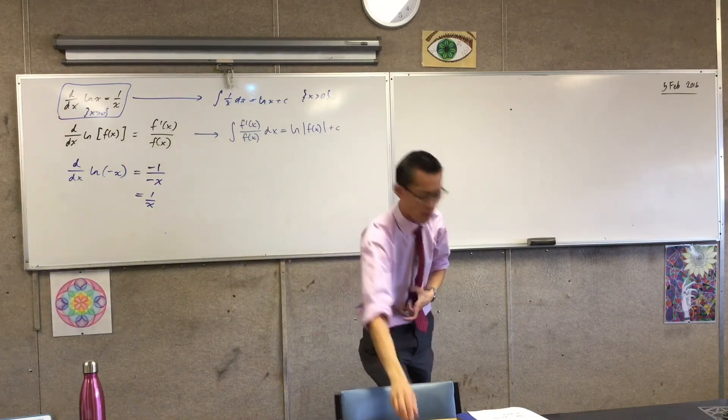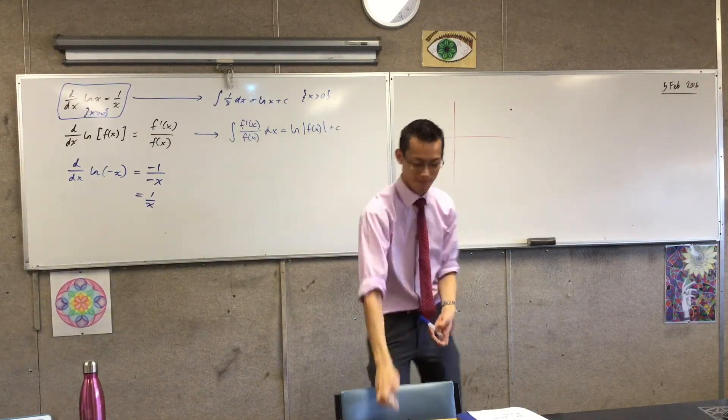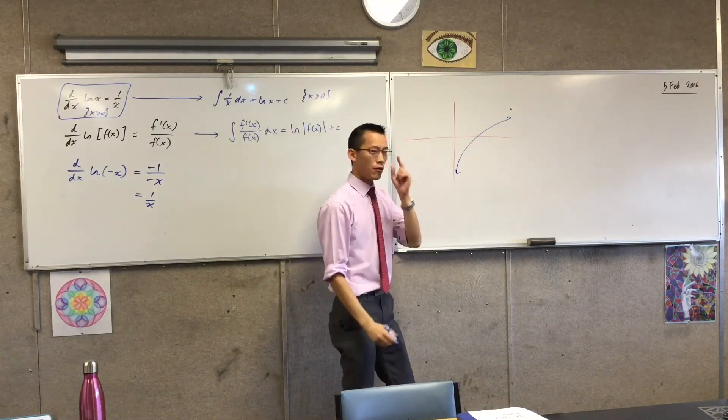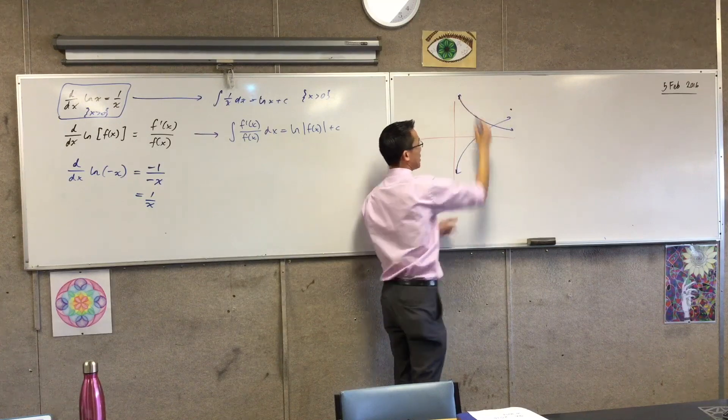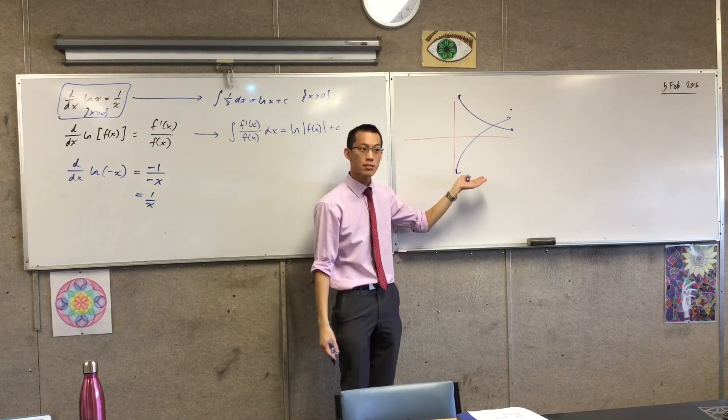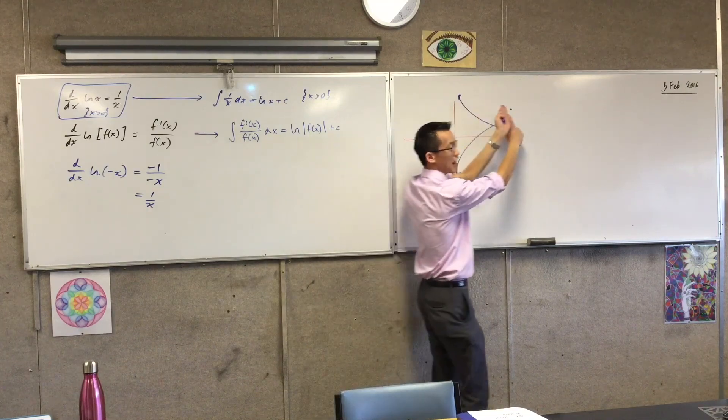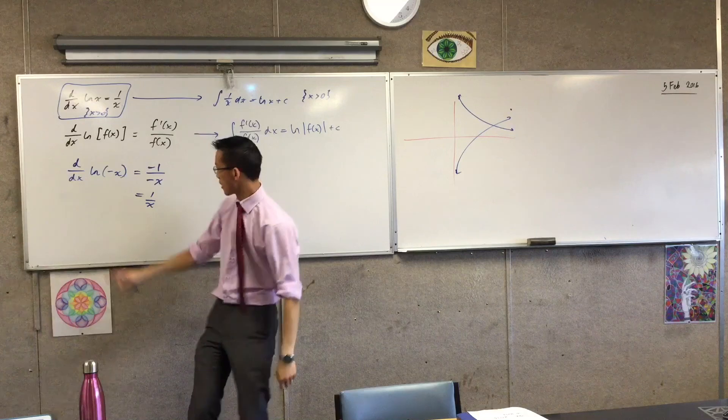And that actually makes a lot of sense, because when you have a look at, very quickly, when you have a look at the way the log function appears on a graph - here's log x. Here is the part of the hyperbola, one over x, that tells me the derivative over here. That matches, doesn't it? Super steep at this point, and then it gets shallower and shallower and shallower. That agrees with what our intuition tells us.